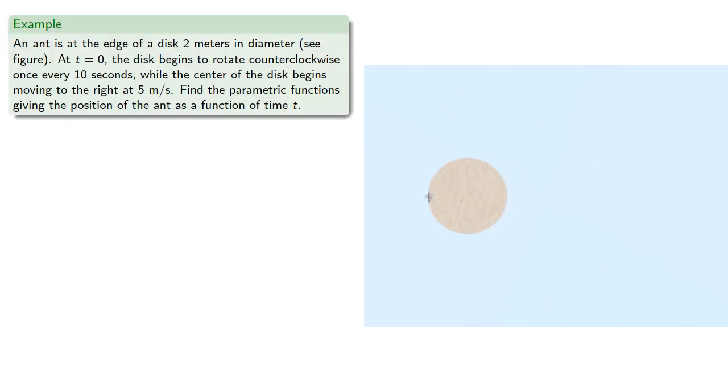So for example, maybe an ant is at the edge of a disk 2 meters in diameter. At t equals 0, the disk begins to rotate counterclockwise once every 10 seconds, while the center of the disk begins moving to the right at 5 meters per second. Let's find the parametric functions giving the position of the ant as a function of time t.